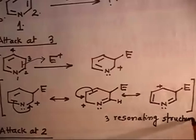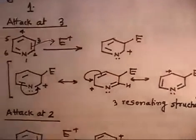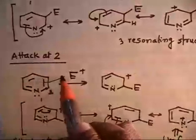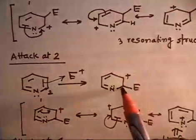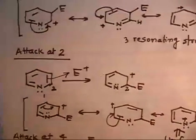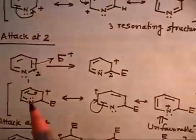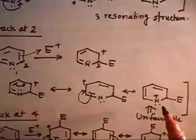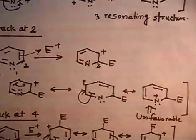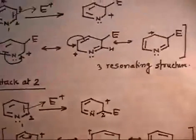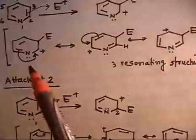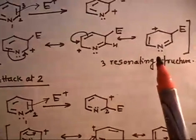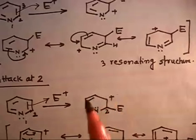Now if I attack at position 2: the electrophile attaches on carbon number 2, giving a positive charge here. Writing the resonating structures: this goes here — positive charge here; next this goes here — positive charge on nitrogen. Now this positive charge on nitrogen is unfavorable because nitrogen is an electronegative atom. If you look at the previous case (attack at 3), none of the 3 resonating structures contain a positive charge on nitrogen, so all three are stable.